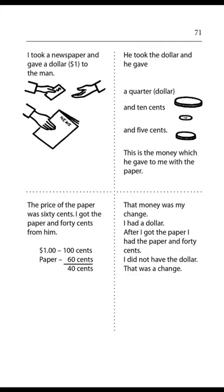Page 71. I took a newspaper and gave a dollar to the man. He took the dollar and gave a quarter and ten cents and five cents. This is the money which he gave to me with the paper. The price of the paper was sixty cents. I got the paper and forty cents from him. That money was my change. I had a dollar; after I got the paper, I had the paper and forty cents. I did not have the dollar. That was a change.